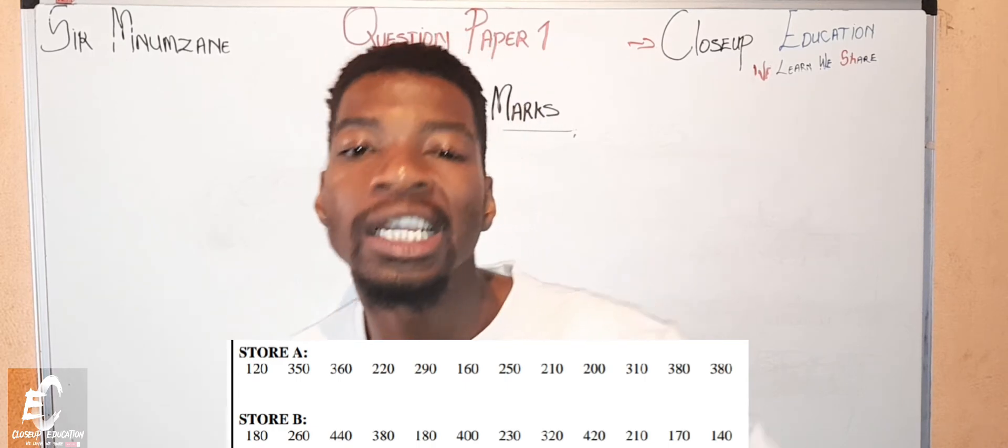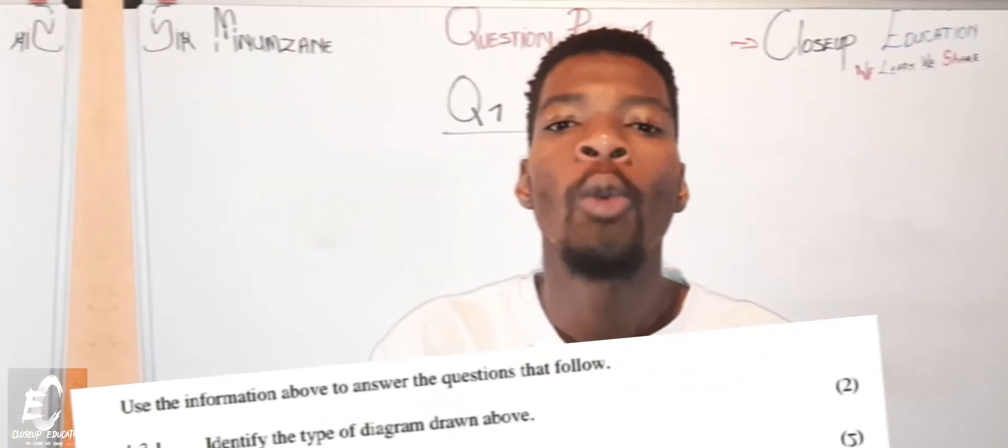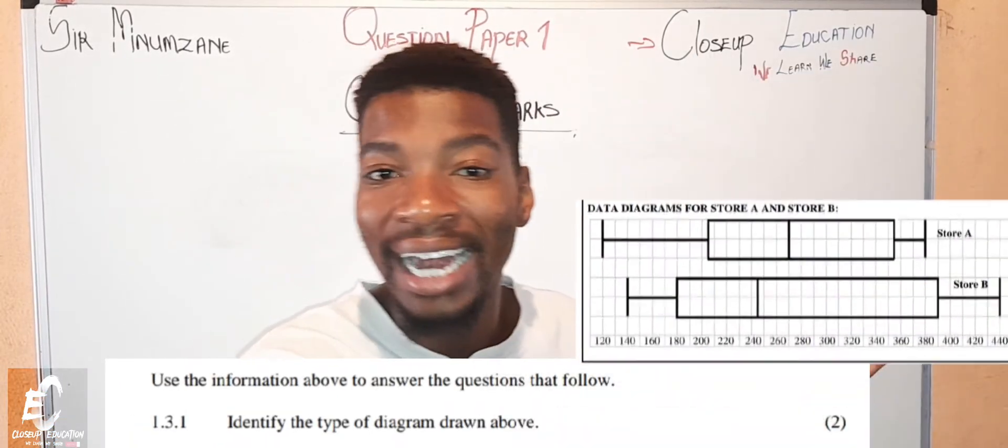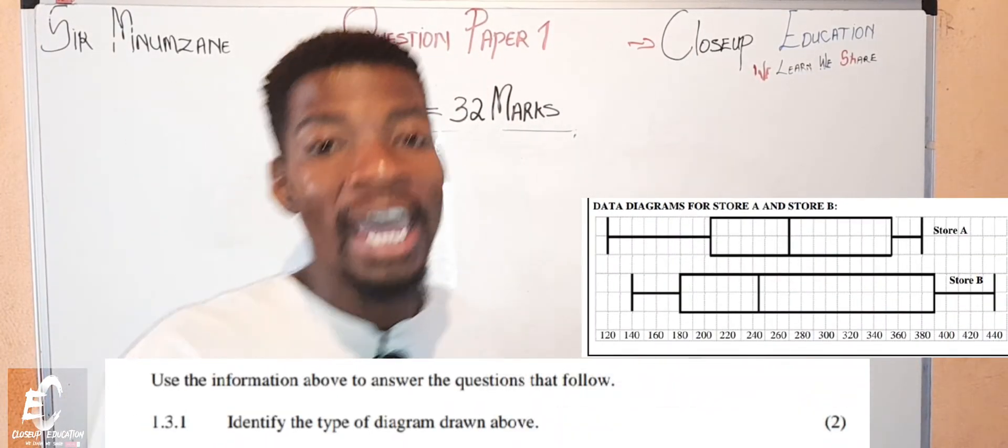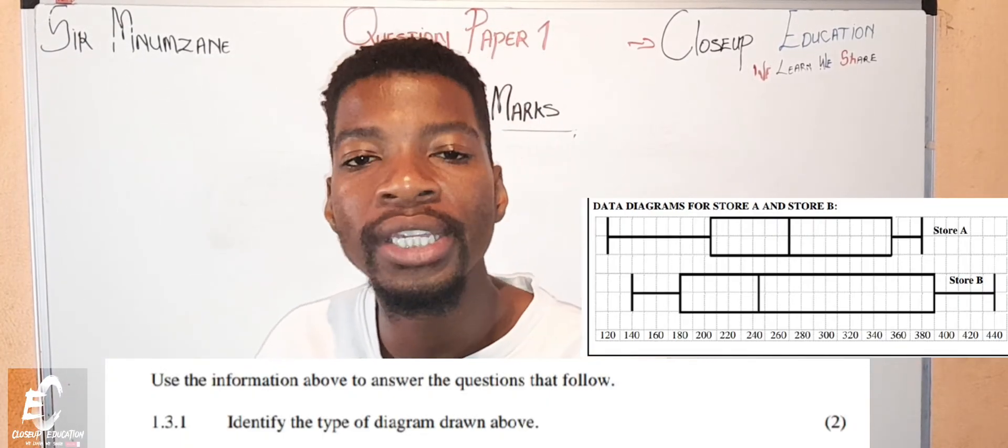Let's move to 1.3.1. Question 1.3.1 simply says what is the name of the diagram? We know the name of the diagram. Everyone knows the name of the diagram. It is called the box and whisker plot diagram.